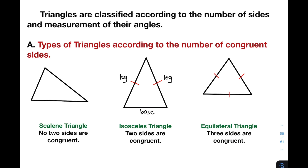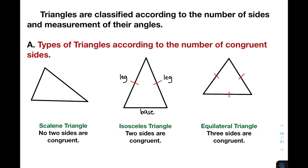So the first one, we have types of triangles according to the number of congruent sides. For the first type of triangle, we have here the scalene triangle, wherein these are triangles with no congruent sides. For example, I will give you the measurements like 5 centimeters, 8 centimeters, and 7 centimeters. As you can see, these measurements are different from each other — no equal sides, therefore no congruent sides. And definitely, these measurements can represent or can form a scalene triangle.